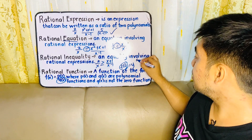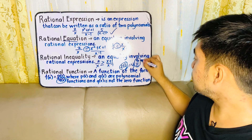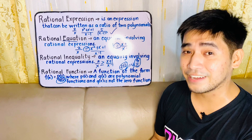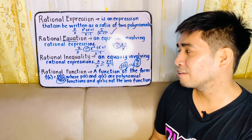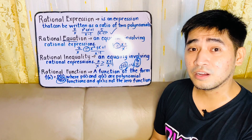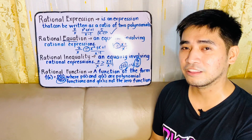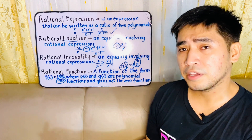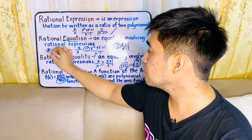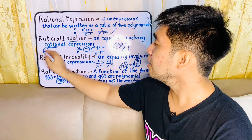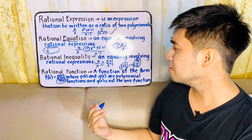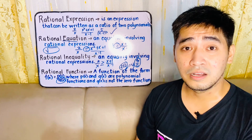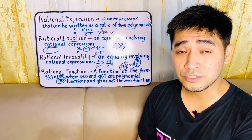For example, 9x over 0 — there is no real solution, therefore it becomes undefined. Again, if the denominator of a fraction becomes zero, it becomes undefined and there is no real solution. Also, if the given has a square root or radical sign, it is not a rational expression, rational equation, rational inequality, or rational function. None of these categories will belong to a given with a square root sign or radical sign.